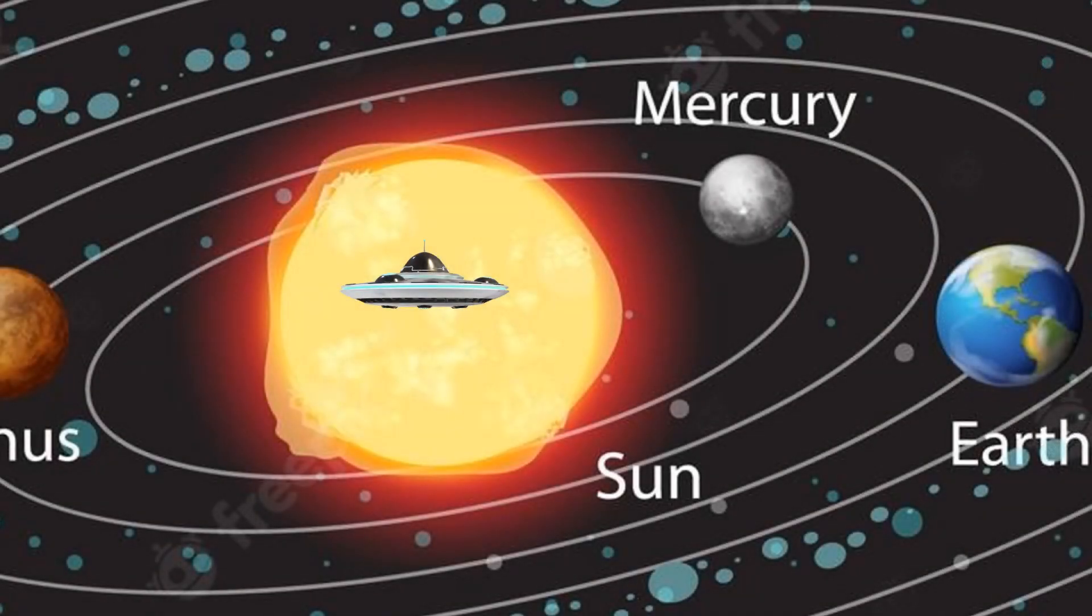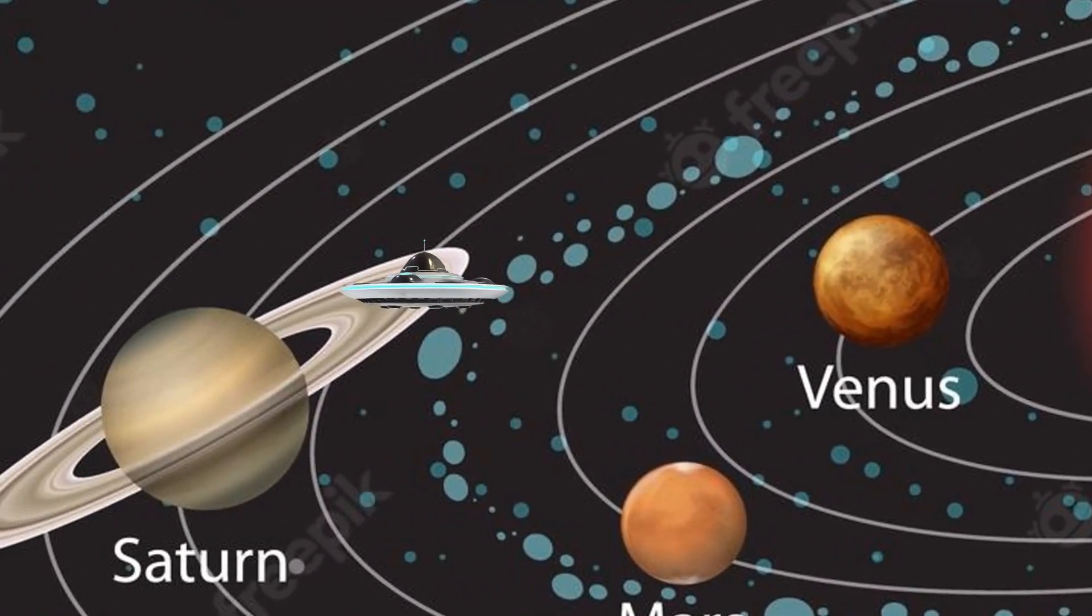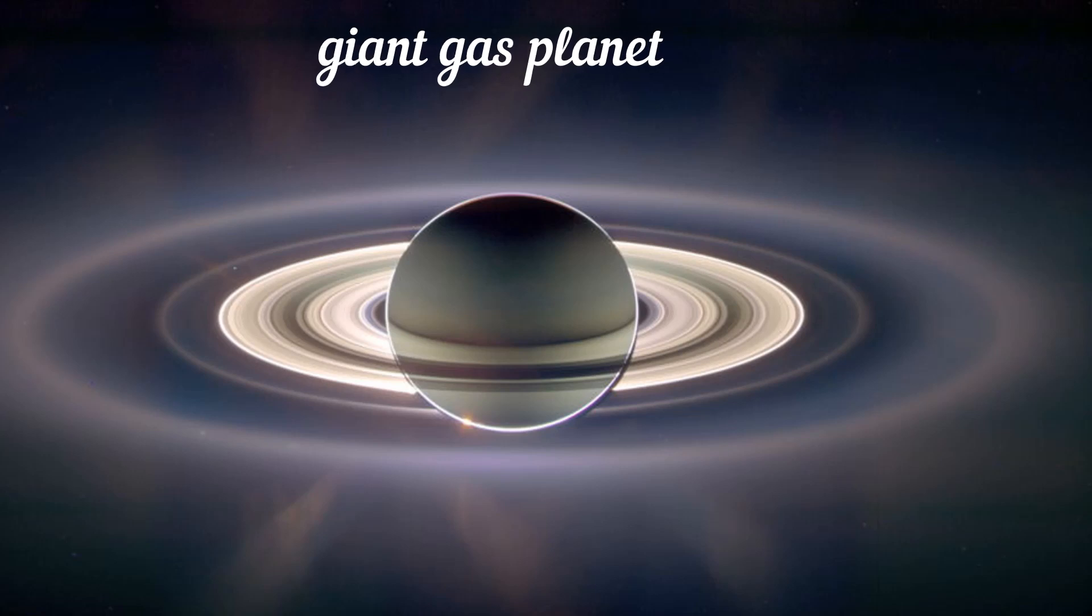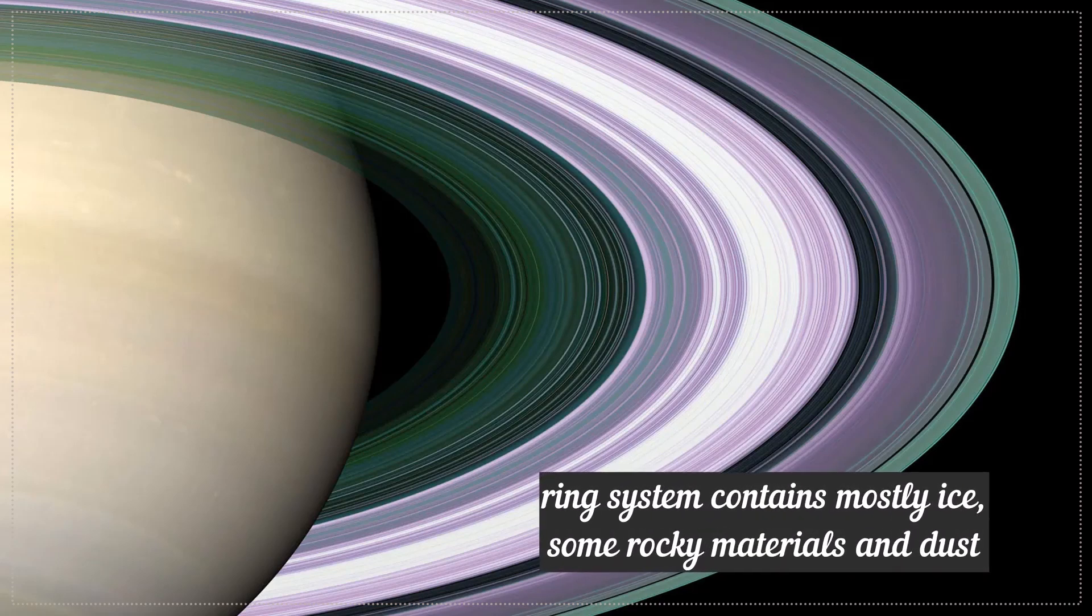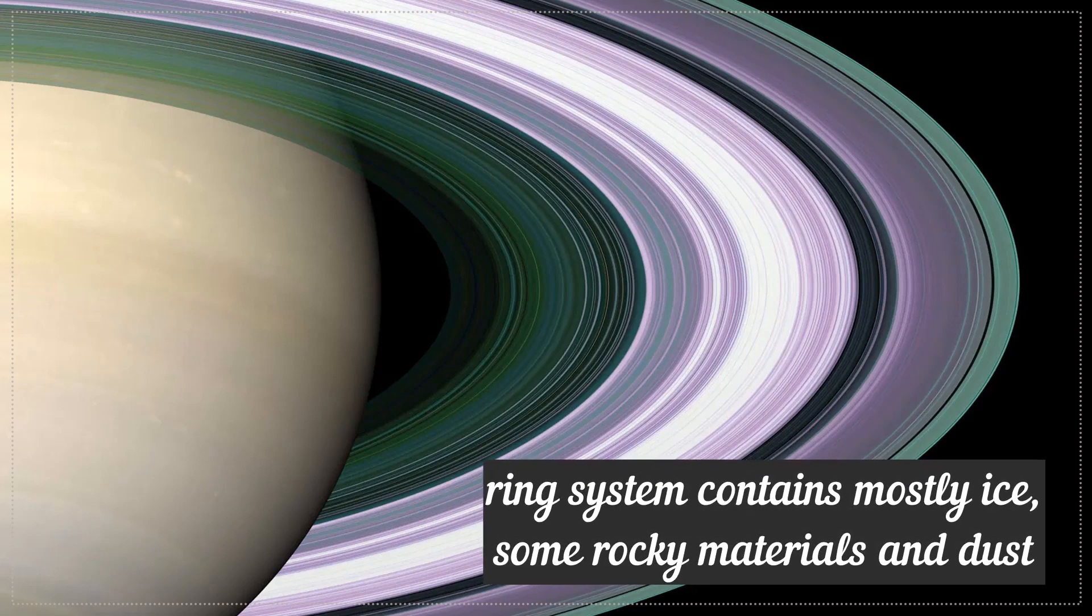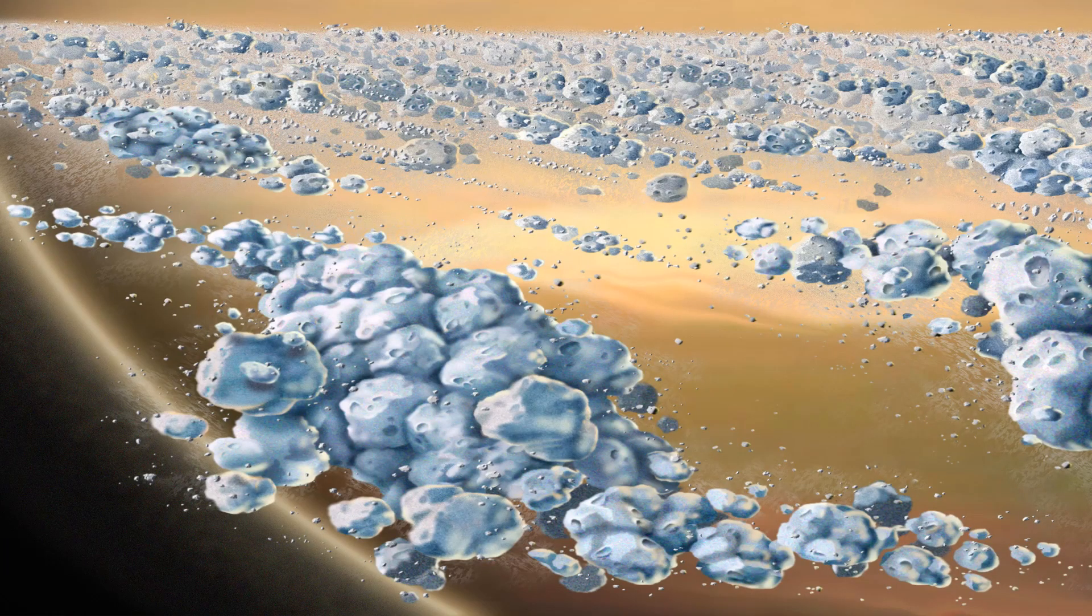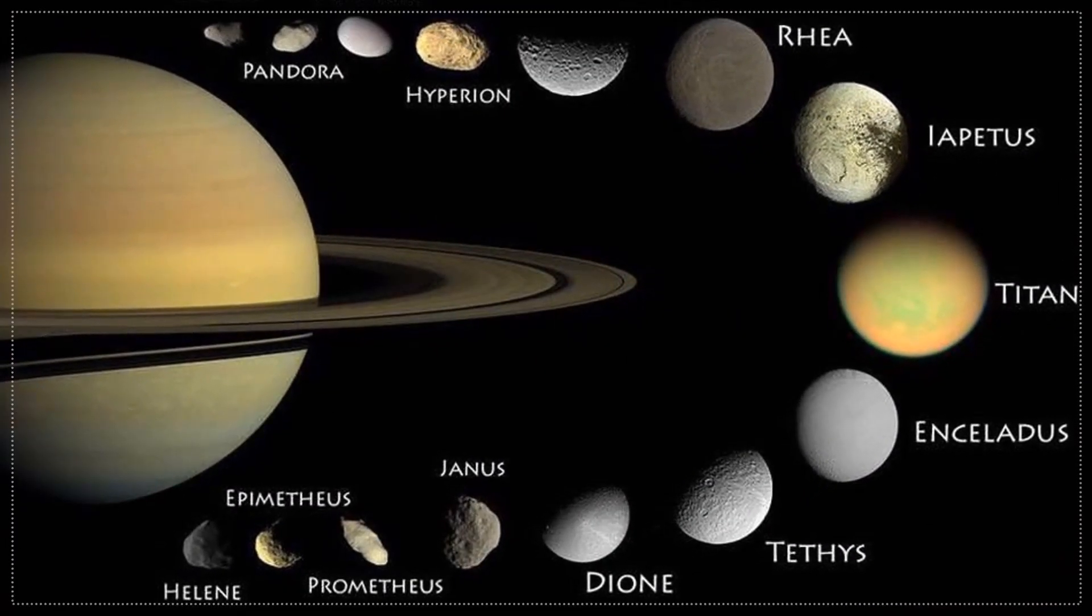Then, we will travel to the sixth planet from the Sun, Saturn. Saturn is classified as a giant gas planet. It has a ring system which contains mostly ice and a small amount of rocky material and dust. Until now, we've found that Saturn has 62 moons.